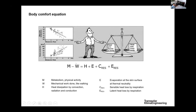The losses in the body comfort equation include the activity you are performing at a specific moment, heat dissipation by convection, radiation and conduction, evaporation through sweating at the skin surface, and heat loss by respiration — both sensible and latent heat loss through the body's respiratory mechanism.